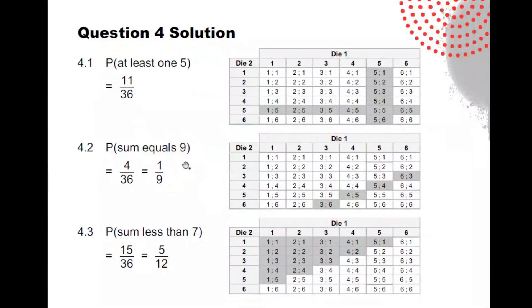If I want the sum equaling nine, I can see very quickly from my table I've written out three six, four five, five four, six three. And six three and three six are different. Three on the first dice, six on the second dice is different to six on the first dice and three on the second dice. So I've got four of those. A sum less than seven, there are all my possibilities, so I can get 15 out of 36. And again, all of them you need to simplify.